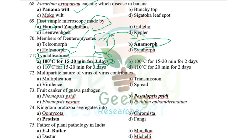The multipartite nature of viruses — I'm not sure, maybe it contributes to virulence. Fruit canker of guava is caused by Pestalotiopsis citri.